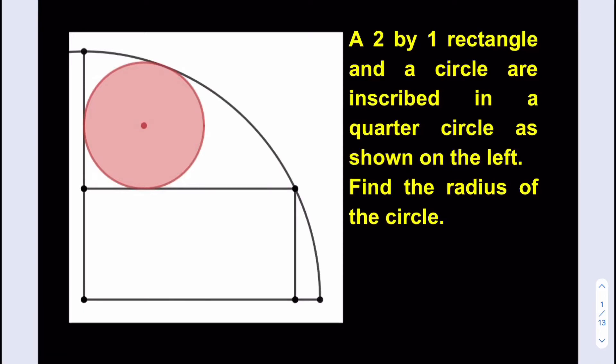Hello everyone. In this video we're going to be solving another geometry puzzle, which is pretty interesting. We have a 2 by 1 rectangle and a circle that are inscribed in a quarter circle as shown on the left. Find the radius of the circle, which was shaded.